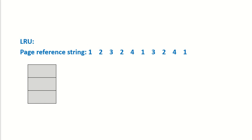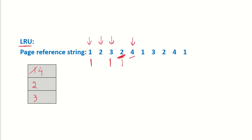Now let's discuss LRU — the Least Recently Used page replacement policy. The first three page references are page faults because memory is empty. Then 2 is a hit, then there is a reference to 4. We replace the page which was least recently used: 2 was used very recently, 3 was used slightly earlier, and 1 was used the earliest. So page 1 is replaced by 4, which is a page fault.